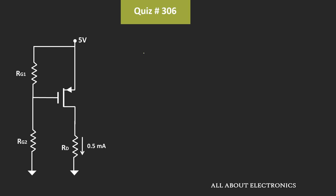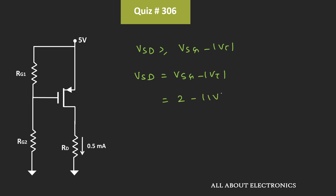To operate the MOSFET in the saturation region, the voltage VSD should be greater than or equal to VSG minus VT. In the worst-case condition, VSD equals VSG minus VT. Here, VSG minus VT is 1V, so in the boundary condition VSD equals 1V.